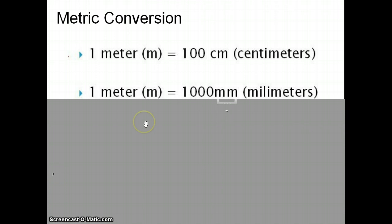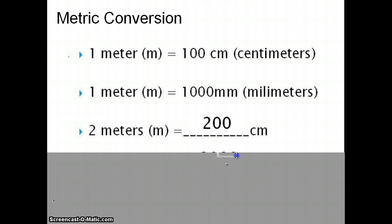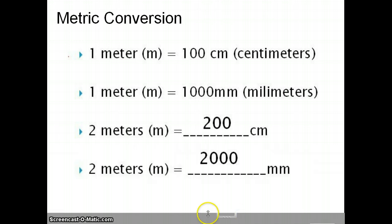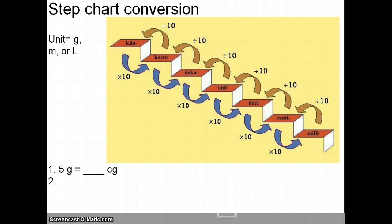So, quick math. If you have two meters, how many centimeters would that be? Hopefully, you said 200. Same kind of math. If you have two meters, how many millimeters would that be? You guessed it. Two thousand. So, an easier way. That was kind of the math way. There's some different things you can do with fractions. But, most often in science class, in eighth grade, we're going to use the step chart.